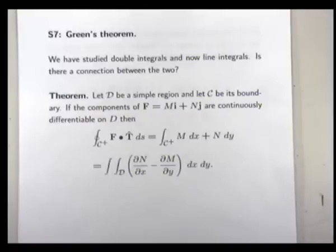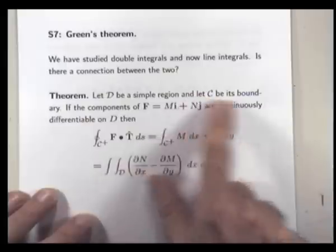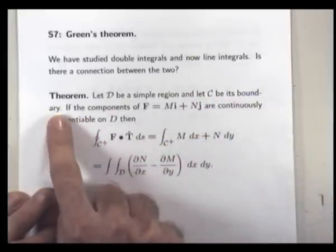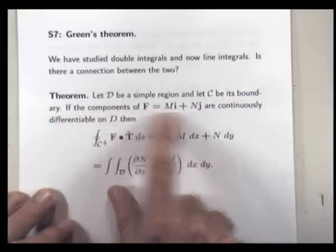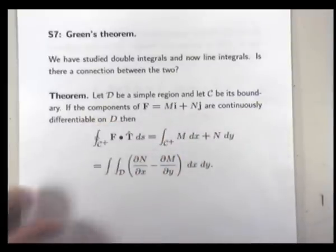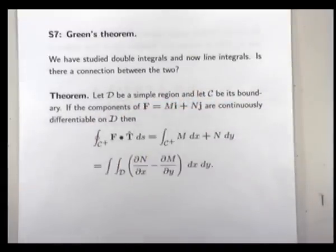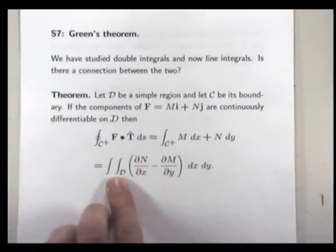All right, so let curly D be a simple region, and curly C be its boundary. If the components of this vector field in the plane are continuously differentiable, I guess that should be a curly D there, but you get the idea, then the line integral around the closed curve C with positive orientation is equal to the double integral over curly D of this function here.